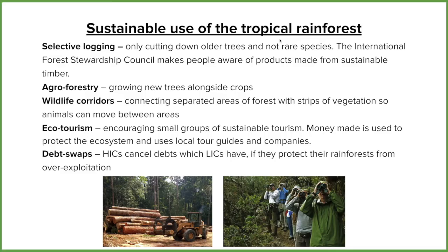We also have agroforestry. This is where we clear the land — so we deforest — build a farm, either for agriculture growing crops or pastoral raising animals. But as we do so, we also plant new trees to replace the ones cut down. Or when the farm is finished and all the available nutrients from the soil have been taken, they replant trees to allow the land to recover.